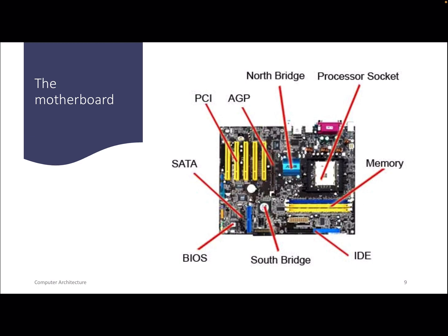This is how a motherboard looks — you can see it by dissecting your system. Different components sit in different places: your processor, the DIMMs in green as discussed last week, the slot for your hard disk, and multiple connectors providing additional functionality.